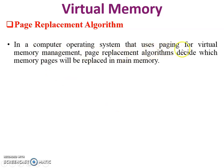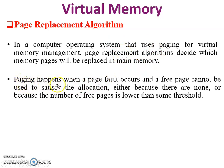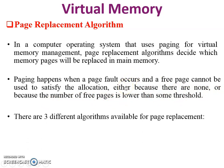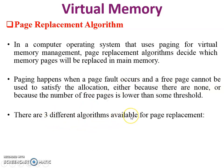Page replacement algorithms: in an operating system that uses paging for virtual memory management, a page replacement algorithm decides which memory pages will be replaced in main memory. These algorithms come into use when a page fault occurs and a free page cannot satisfy the allocation — either because there are none or because the number of free pages is below a threshold. There are three algorithms: FIFO (First In First Out), LRU (Least Recently Used), and Optimal.